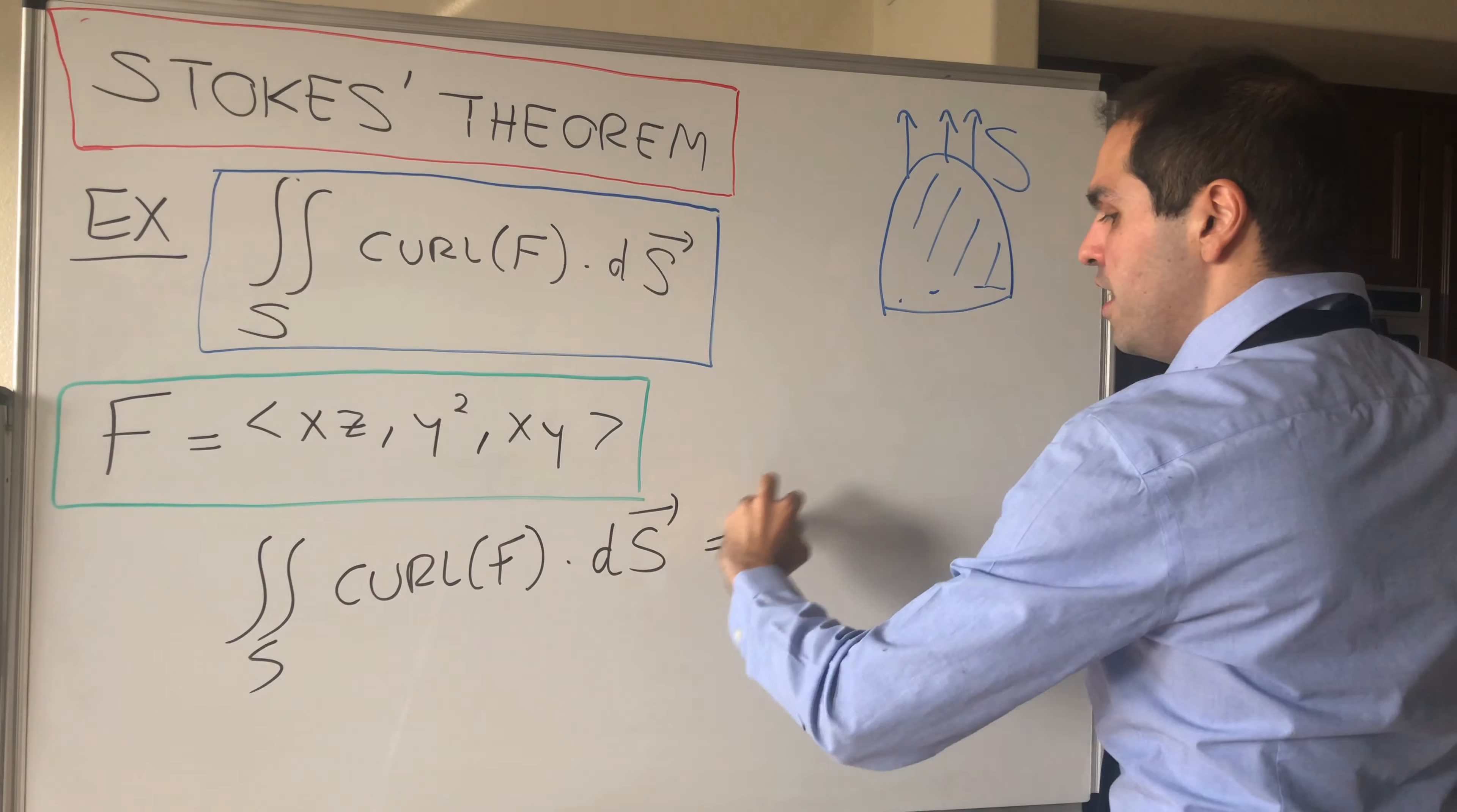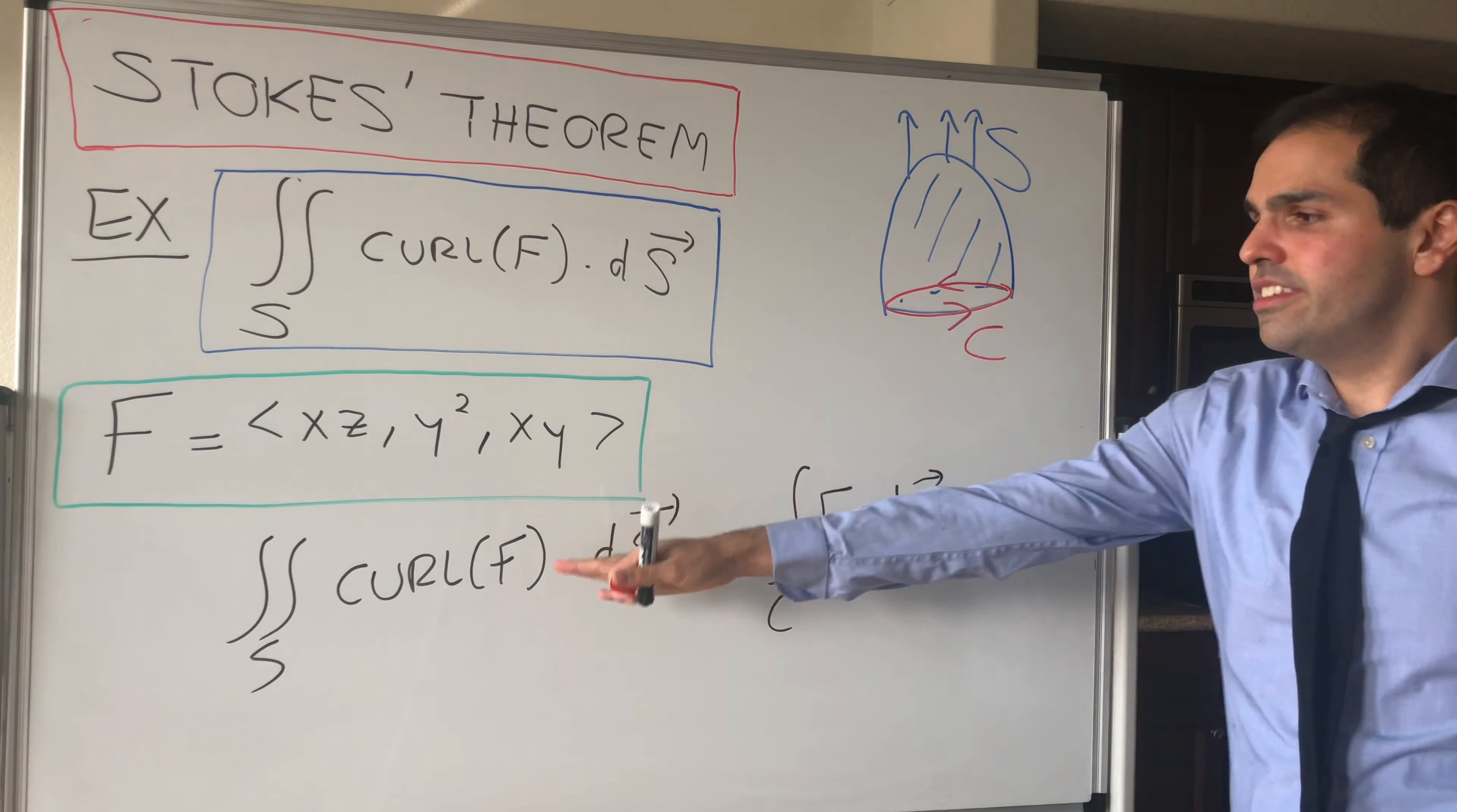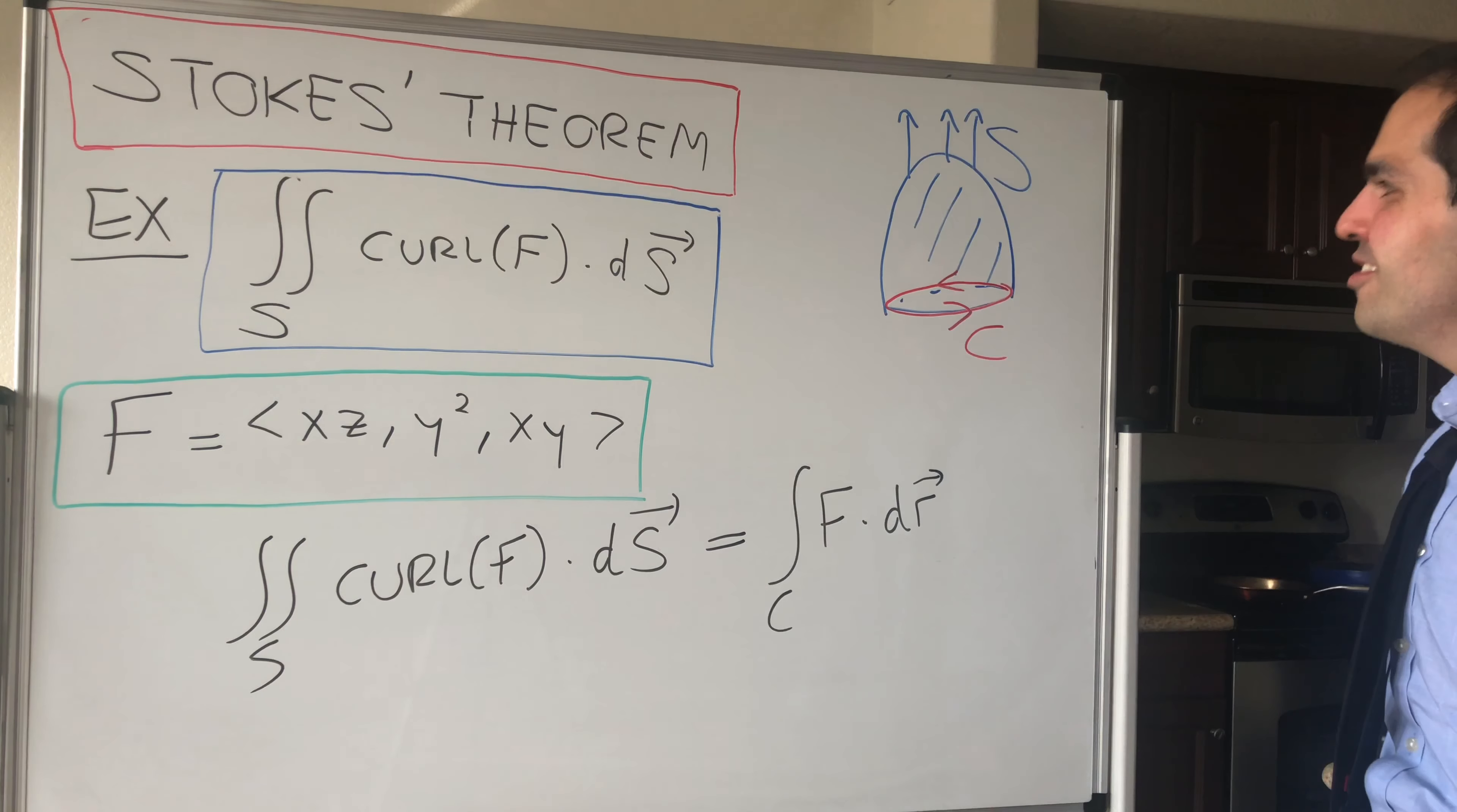All it says is that in order to calculate the surface integral of the curl of F dotted, so think double integral of a derivative, all you have to do is just calculate the line integral of F over the boundary of this surface, and the boundary curve in this case is this curve here. Instead of calculating a surface integral of a curl, all you need to do is calculate the line integral of the original vector field, which is usually way easier to do, especially if you're like me and you forgot how to calculate surface integrals.